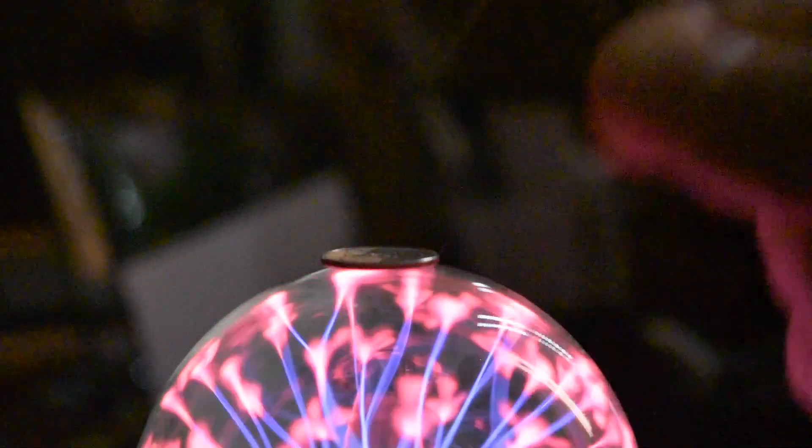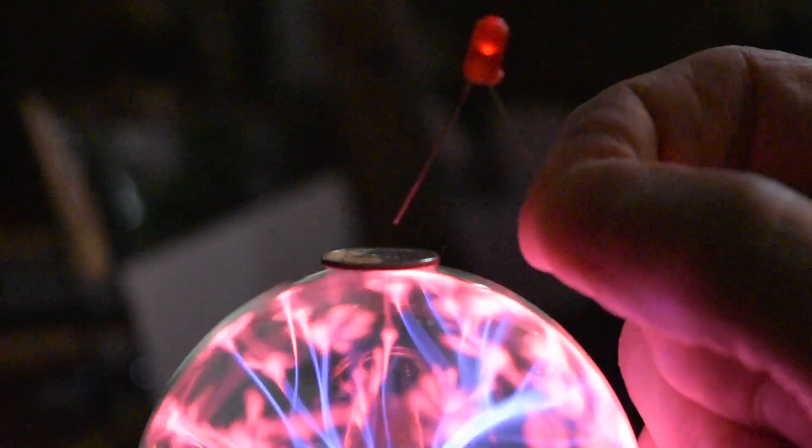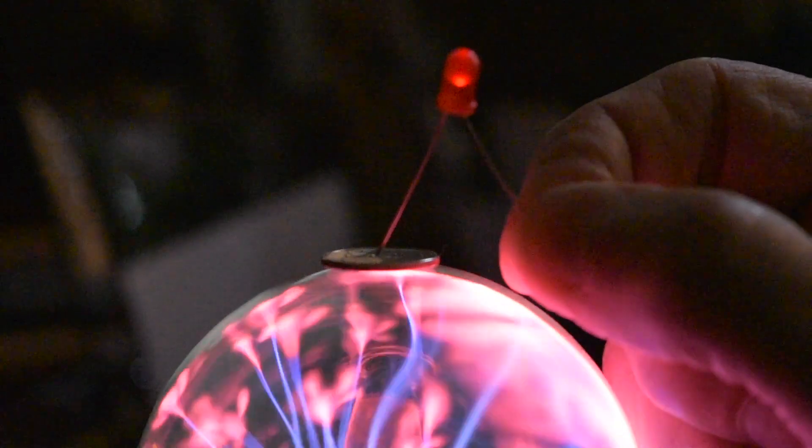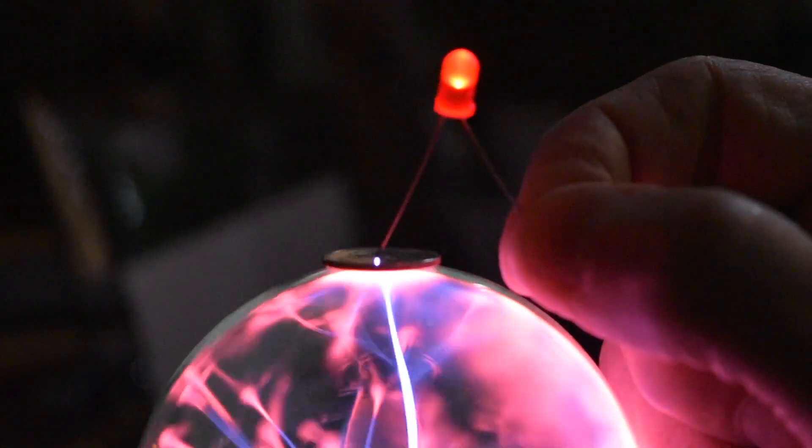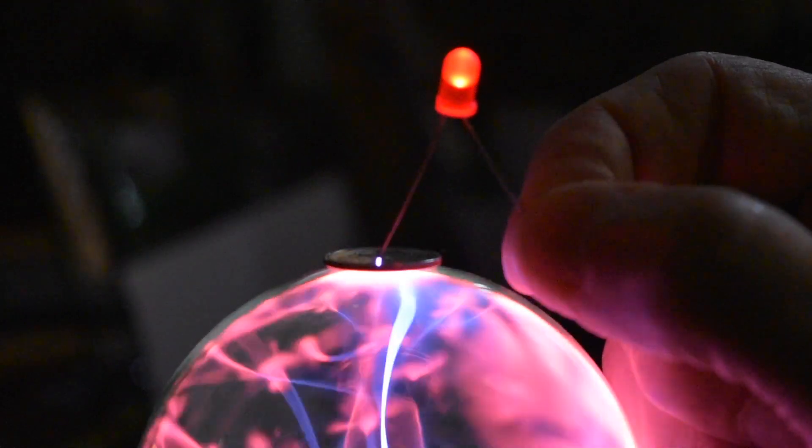Now I have a light emitting diode. I'm going to hold one terminal and bring the other terminal towards the dime. And as the air ionizes between the terminal and the dime, we see that the light emitting diode turns on.